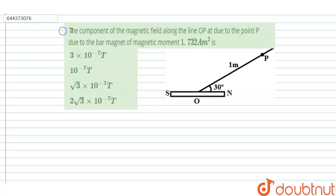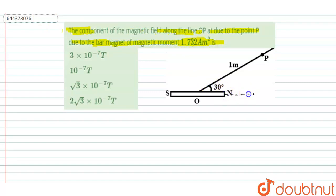Hello, welcome to DoubtNet. In this question, given the component of magnetic field along the line OP at point P due to the bar magnet, the magnetic moment is 1.732 ampere meter square. This is the figure of the question and angle theta is shown with the bar magnet.